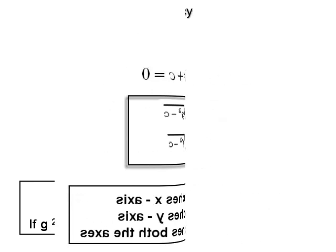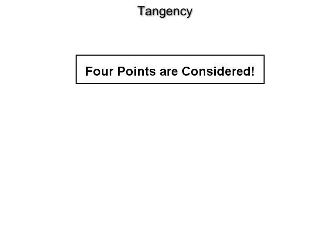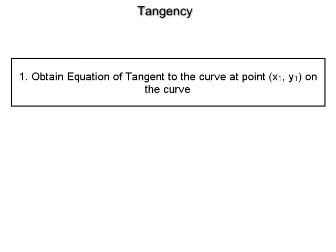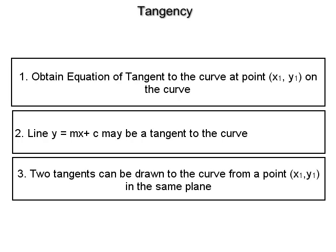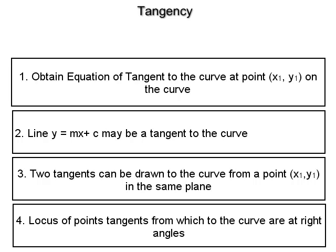The next important part is tangency. In the case of tangency to any curve, we consider 4 points: (1) obtain the equation of the tangent to the curve at a point (x₁, y₁) on the curve; (2) find the condition that the line y = mx + c may be tangent to the curve, i.e., obtain the equation of the tangent having slope m; (3) show that in general two tangents can be drawn to the curve from a point (x₁, y₁) in the same plane; and (4) find the locus of points from which tangents to the curve are at right angles.